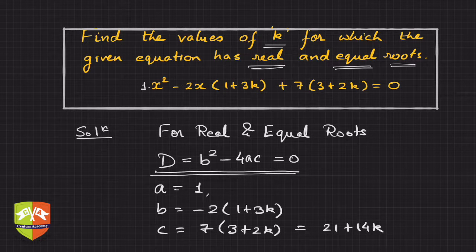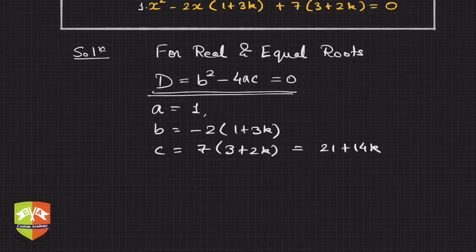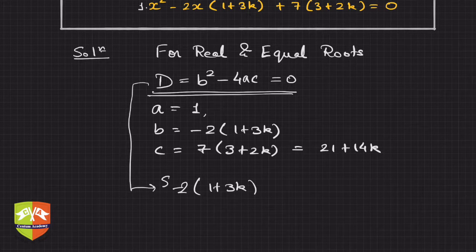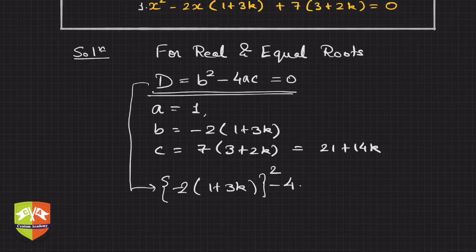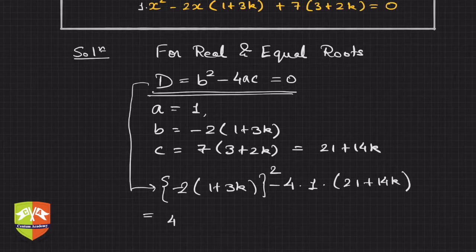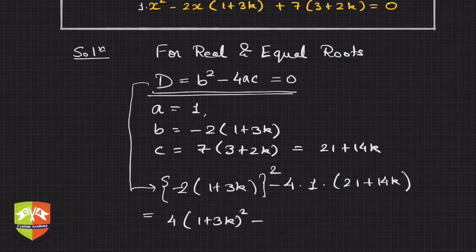Now let's find D. b squared is minus 2(1 plus 3k) whole squared, minus 4 times a — which is 1 — times c — which is 21 plus 14k — and this must equal zero. So we have 4 times (1 plus 3k) whole squared minus 4 times (21 plus 14k) equals zero.